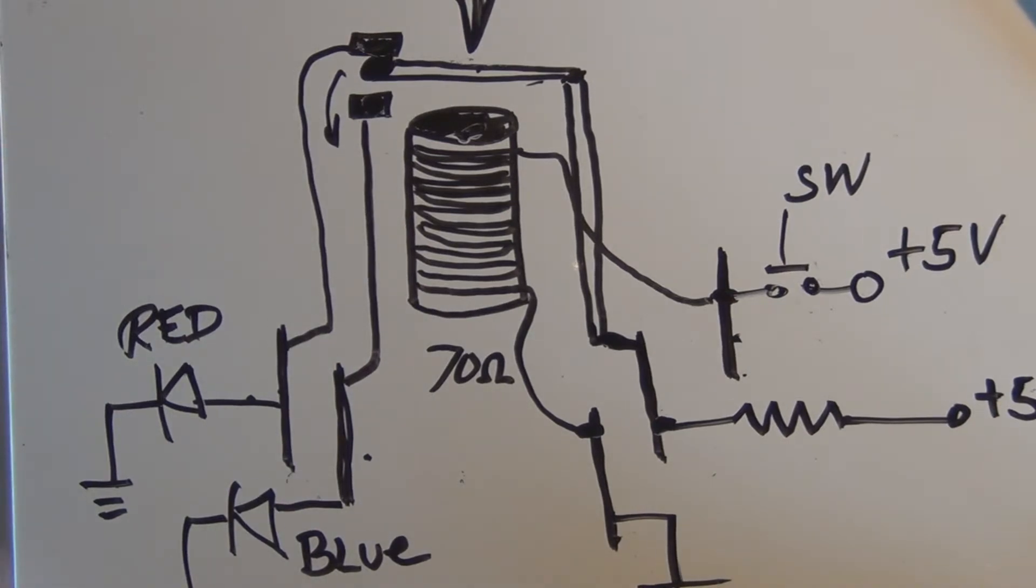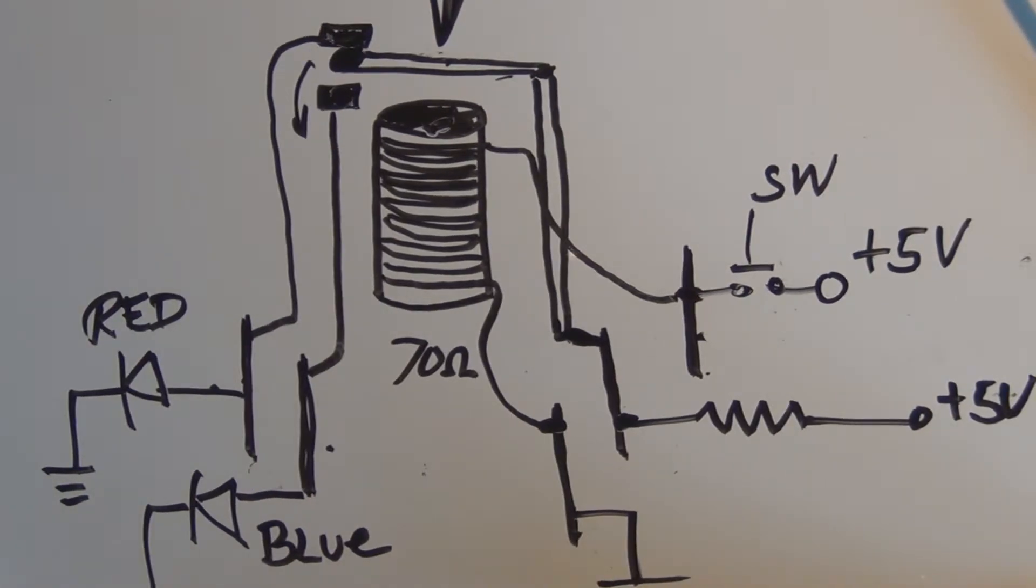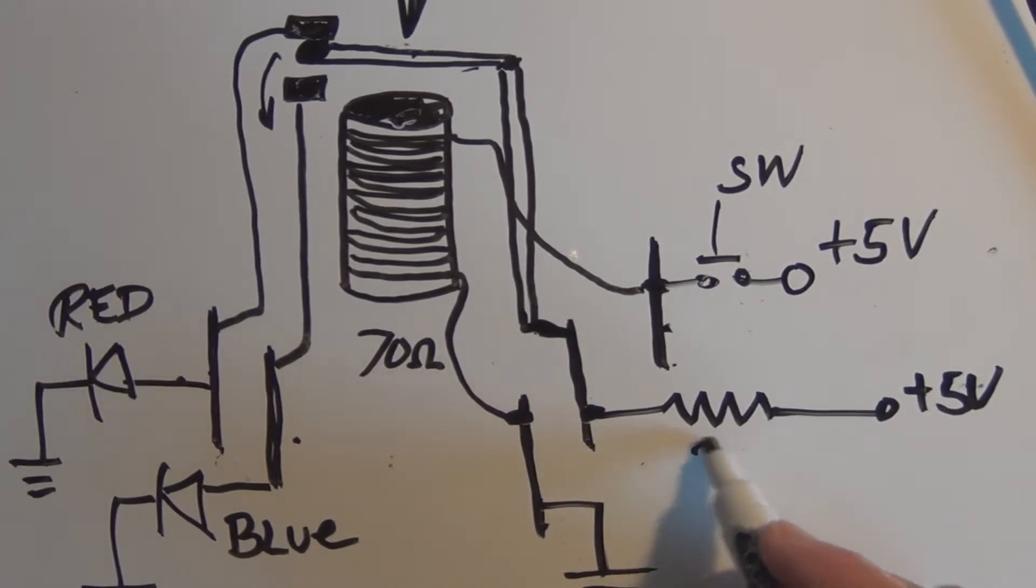And that's basically how a relay works, and this 220 is just a current limiting resistor for the two LEDs.